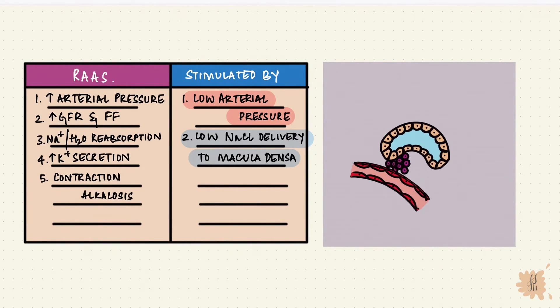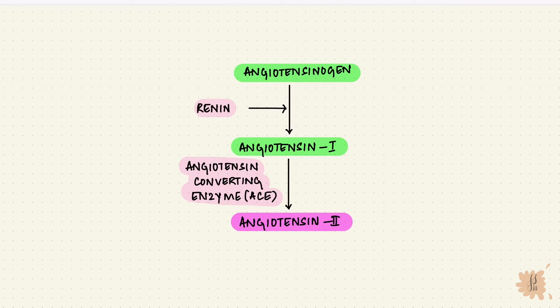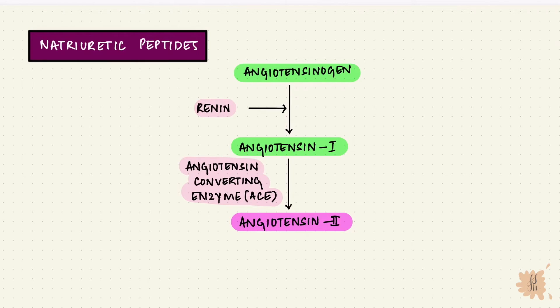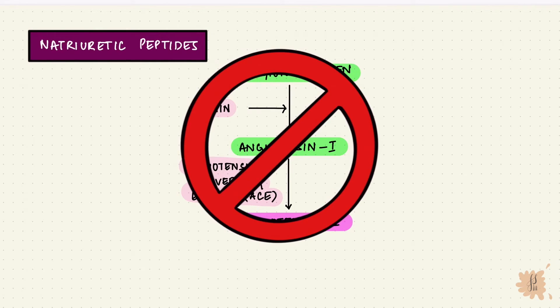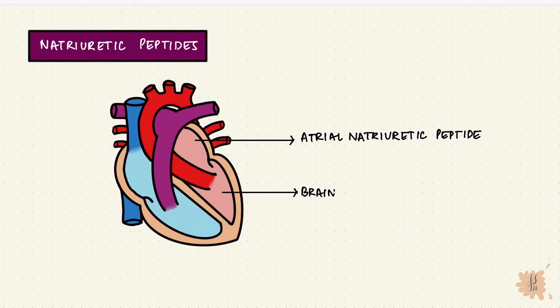The JG cells also have beta-1 receptors of the adrenergic system, so increased sympathetic tone can trigger renin release. This system is regulated by inhibition through the natriuretic peptides. The atrial and brain natriuretic peptides from the atria and ventricles are released by stretch of these chambers when volume is high, and they cause natriuresis — elimination of sodium in urine.